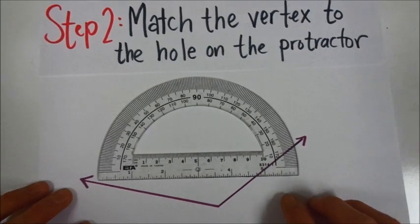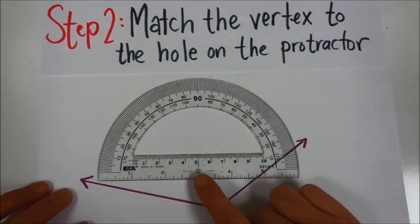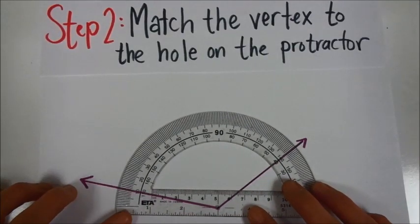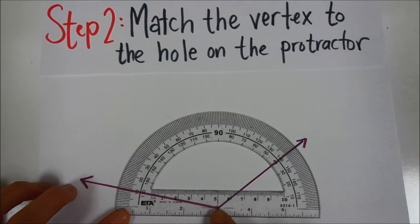So we're going to model matching the vertex to the hole on the protractor, and there's a hole right here down at the bottom in the center. So you're going to place it carefully on the vertex there.